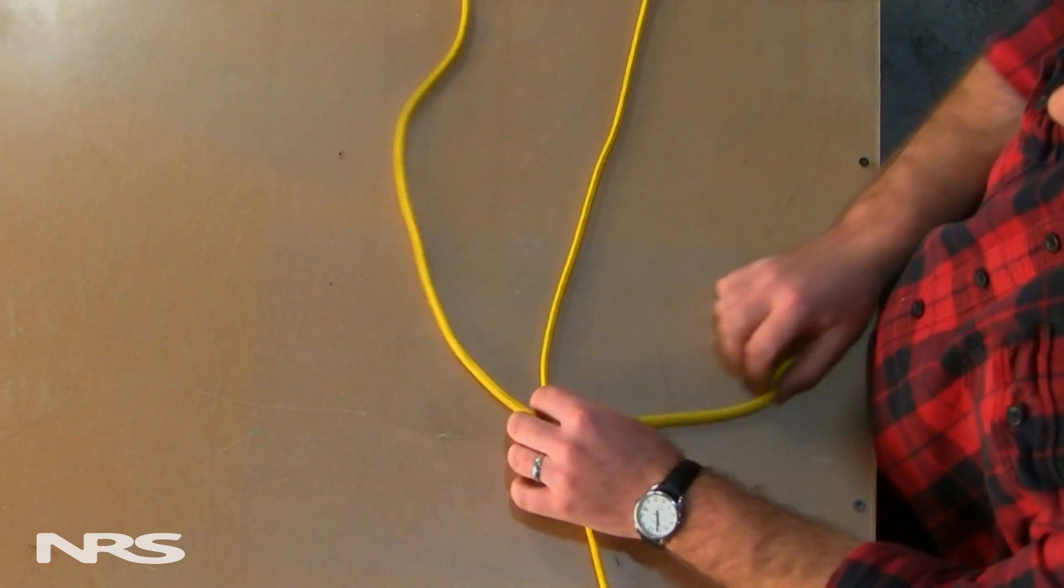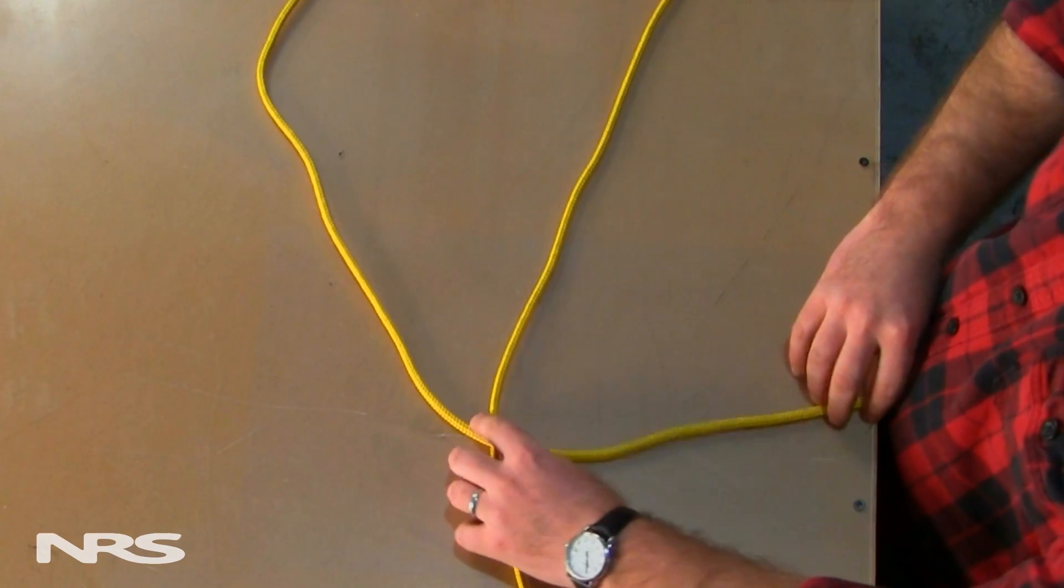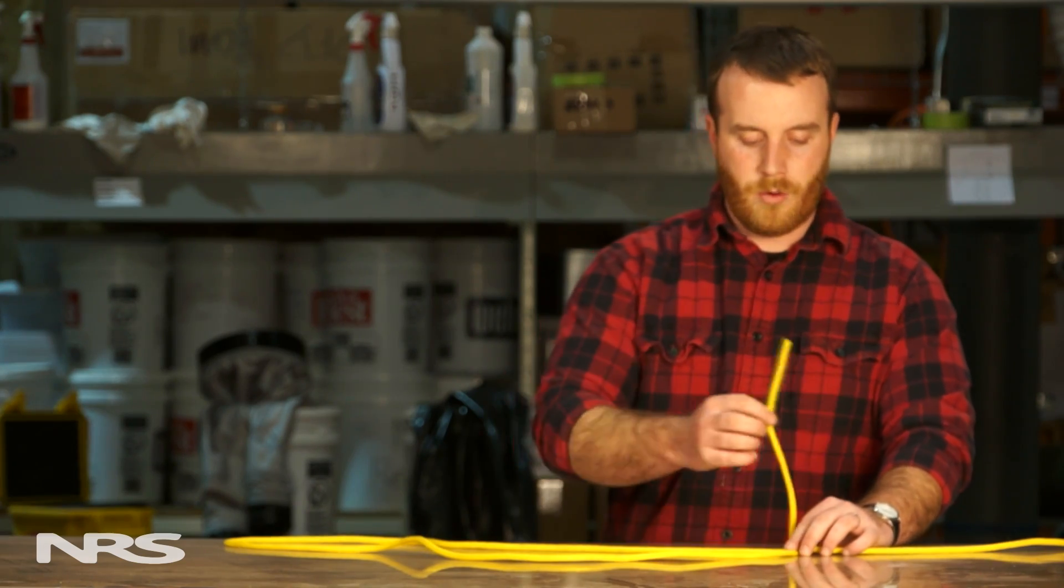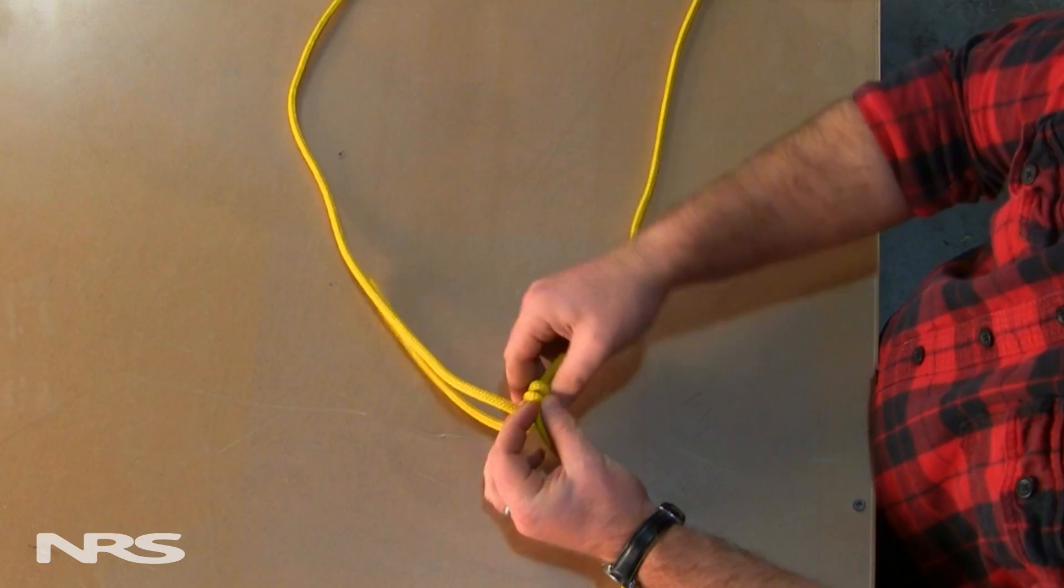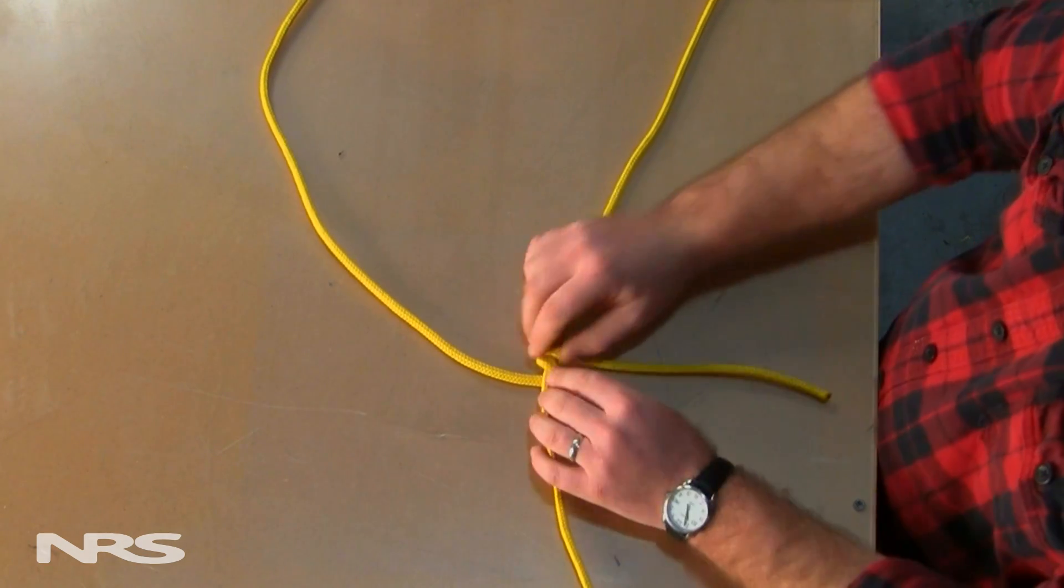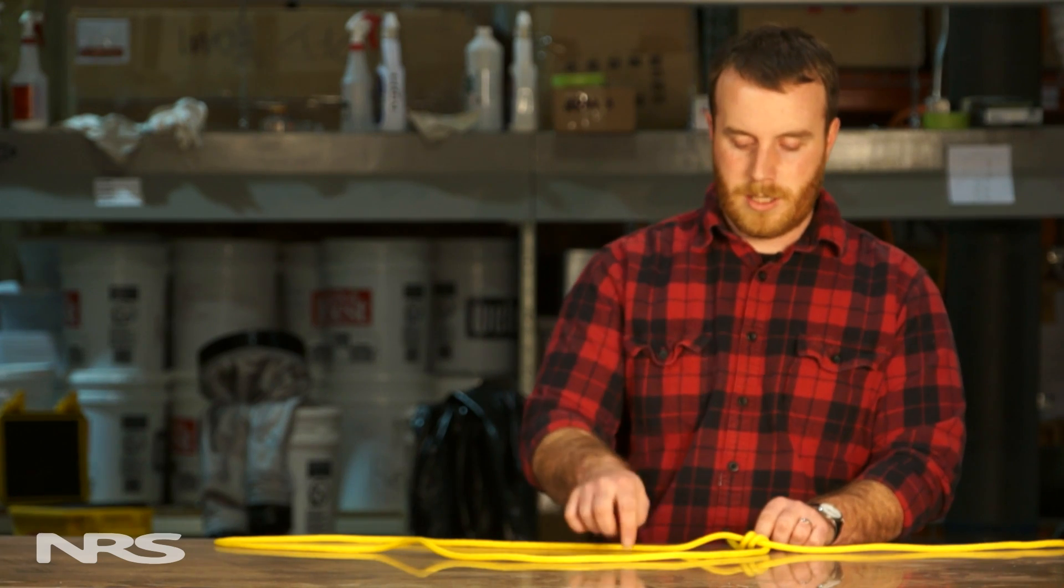You're going to take the loose end, take about a foot of it, and put it underneath the main portion of rope, creating a big loop. You wrap it over once into the loop, and then twice into the loop, leaving it out, creating two little coils here that are on the main portion inside the loop.